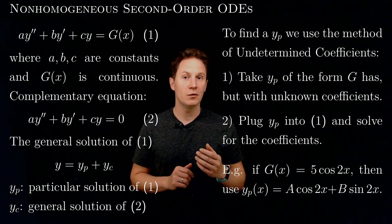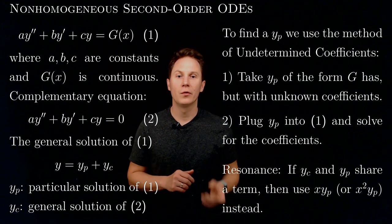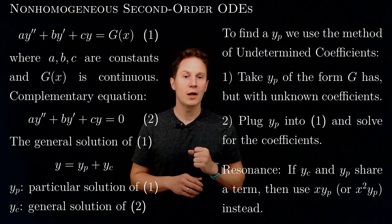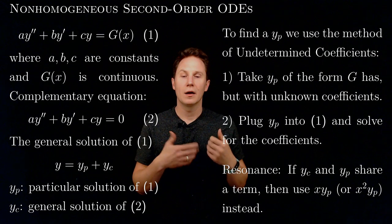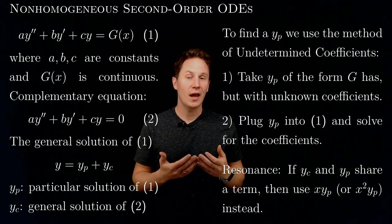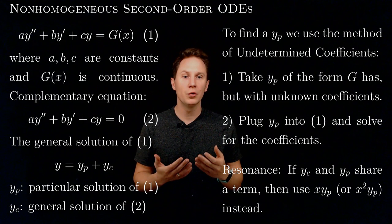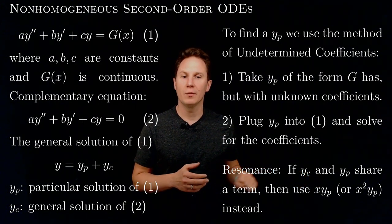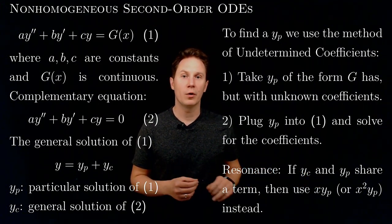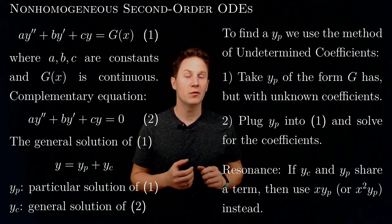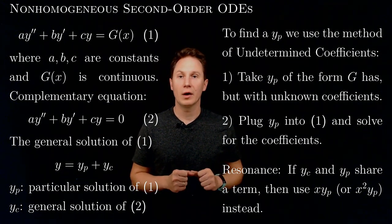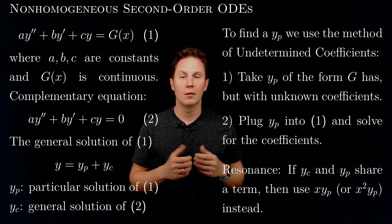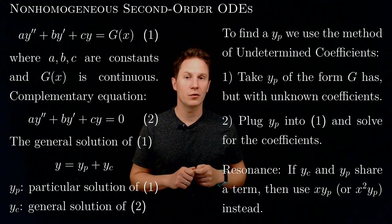Finally, there is an interesting phenomenon called resonance. This is when the general solution of the complementary equation and our trial solution share a term. In this case, the trial solution might not be useful as it stands, and we should use x times y sub p, or if that doesn't work, x squared times y sub p instead. Those trial solutions with undetermined coefficients, once the coefficients are found, will give us a particular solution.